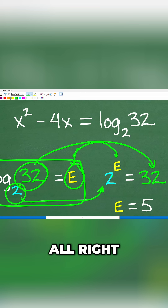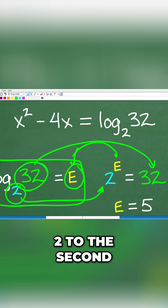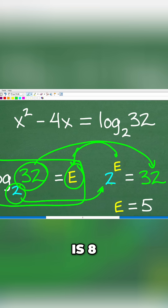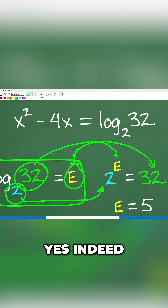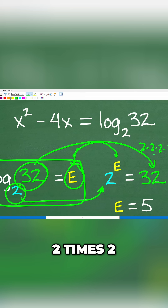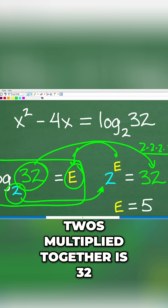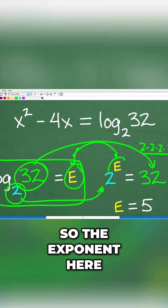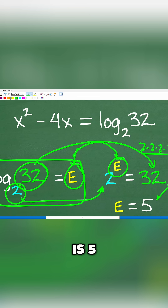So 2 to what power is equal to 32? Well, 2 to the first, 2 to the second — no, that's 4. 2 to the third is 8. 2 to the fourth is 16. 2 to the fifth — yes, indeed — 2 to the fifth is equal to 32. Because 2 times 2 times 2 times 2 times 2: five 2s multiplied together is 32. So the exponent here is 5.